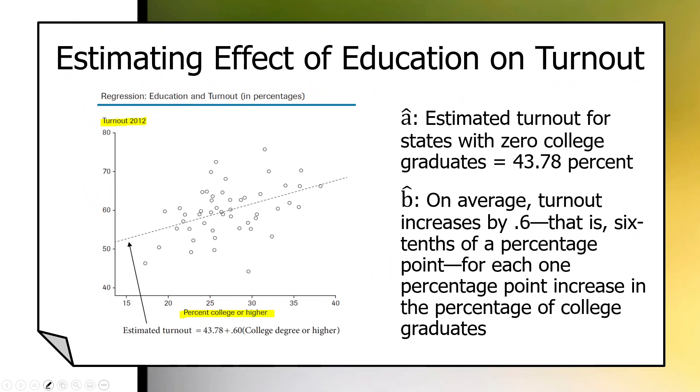And here are the elements of that line. Estimated turnout in 2012, which would be y-hat, equals a, which is 43.78. This is the estimated turnout when x is zero. So in states where nobody has a college degree or higher, the regression would estimate a turnout to be about 44%.